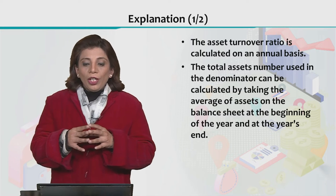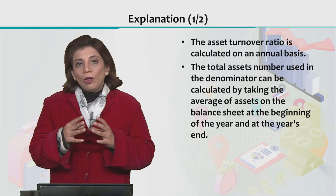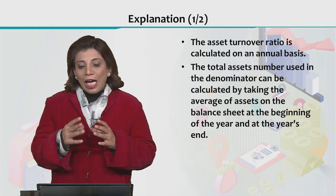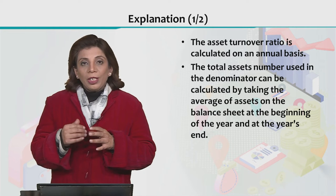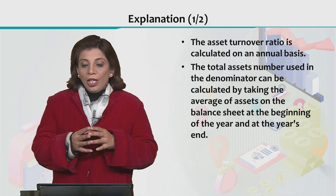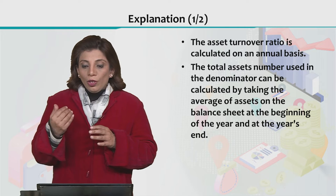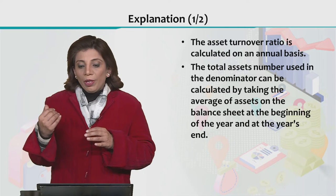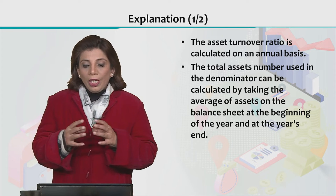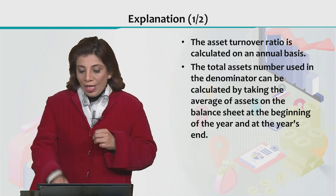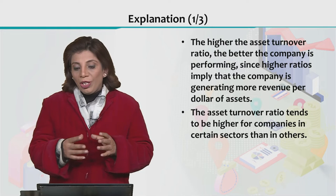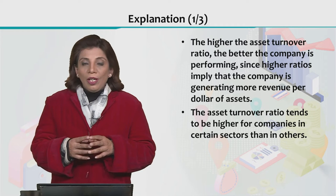The asset turnover ratio is always calculated on an annual basis and is expressed in terms of percentages. The total assets number used in the denominator is calculated by taking the average, as mentioned earlier.